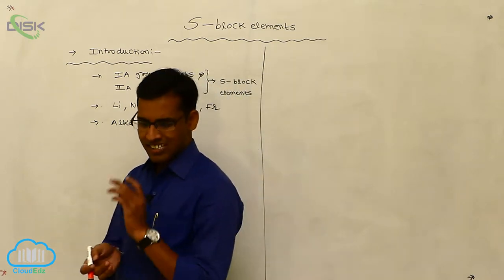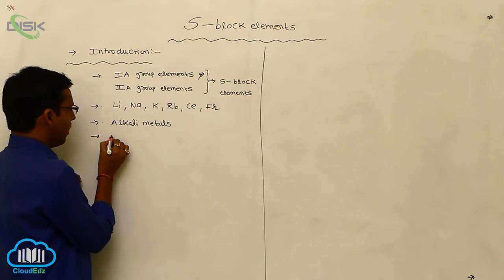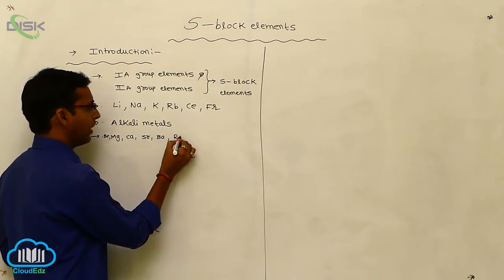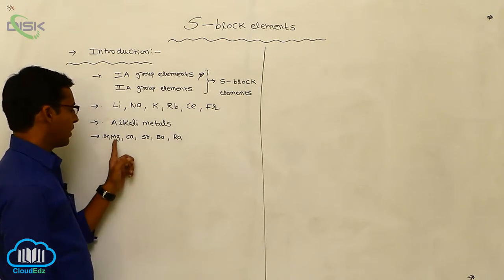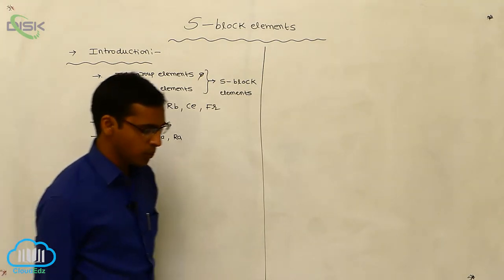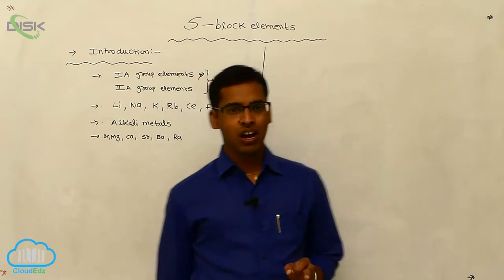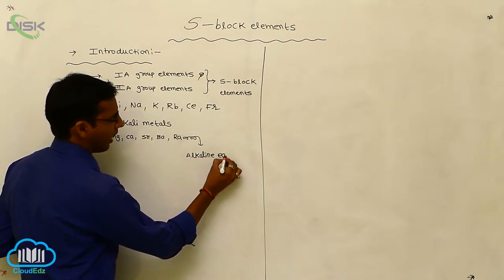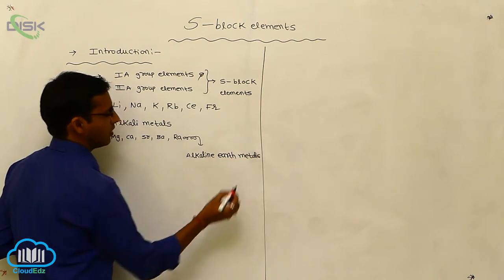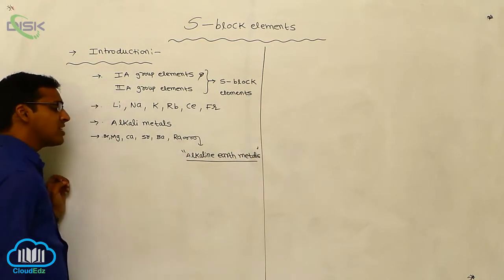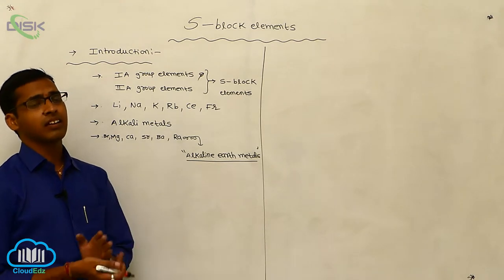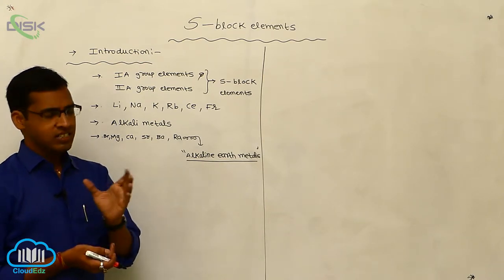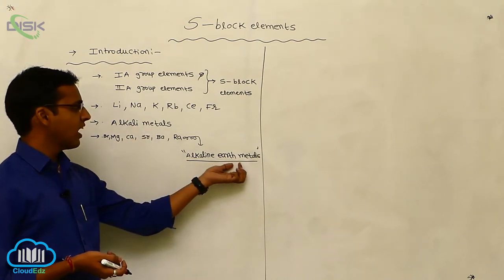The second A-group elements are beryllium, magnesium, calcium, strontium, barium, and radium. These are called alkaline earth metals because they generally produce oxides and hydroxides, and based on that nature they are called alkaline earth metals.